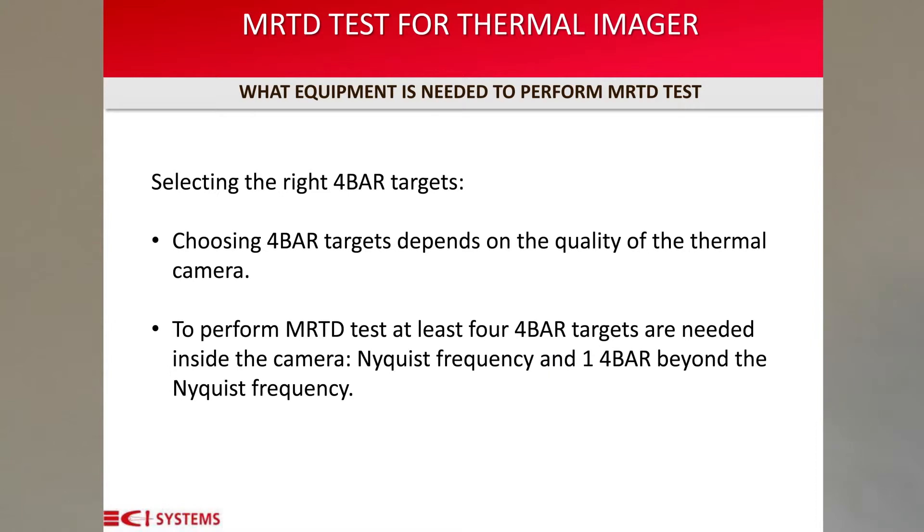Third, a differential blackbody is required for MRTD measurement. Since the MRTD test is run by setting the temperature of the blackbody relative to the temperature of the target, the blackbody controller constantly monitors the target's temperature. To perform MRTD tests, you need to select at least five four-bar targets with different spatial frequencies — four within the Nyquist frequency of the camera and one just beyond the frequency to verify that you have actually reached the limit of the camera.